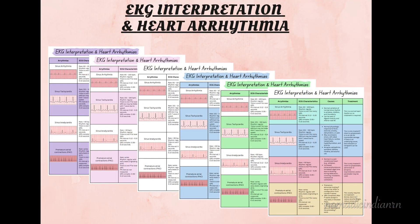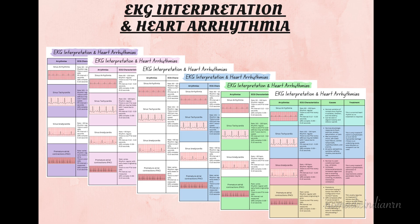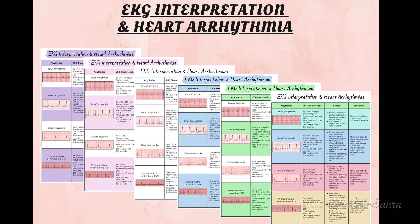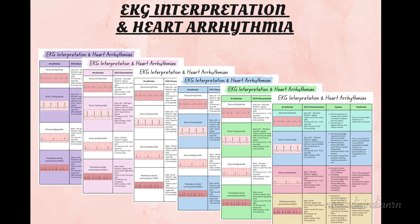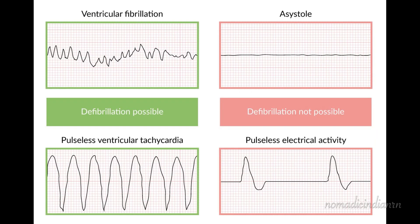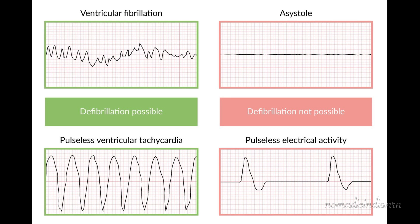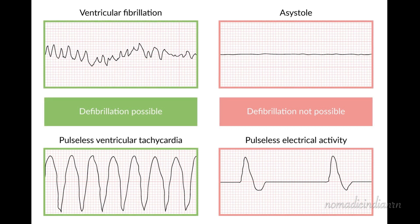Now let's talk about EKG interpretation. The NCLEX often tests you whether you can recognize lethal arrhythmias. The NCLEX loves asking about cardiac emergencies and you must be able to recognize these rhythms fast. I'm going to break it down for you with simple tricks, real NCLEX style questions and easy mnemonics. These four lethal rhythms can appear on the NCLEX — you'll need to know what they look like, how to recognize them and what to do next.